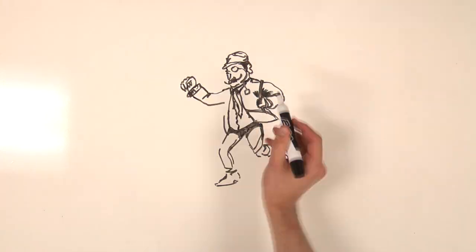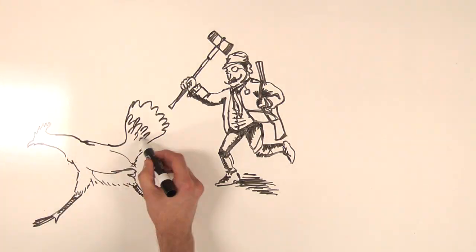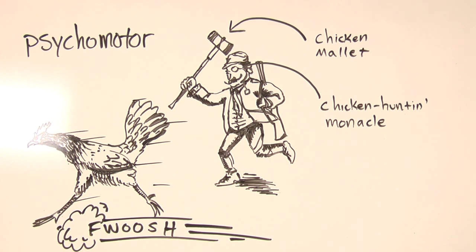The psychomotor domain involves the adoption of skills requiring hand-eye coordination and other physical tasks. It doesn't have a whole lot to do with library instruction, so we're going to skip right on over to...